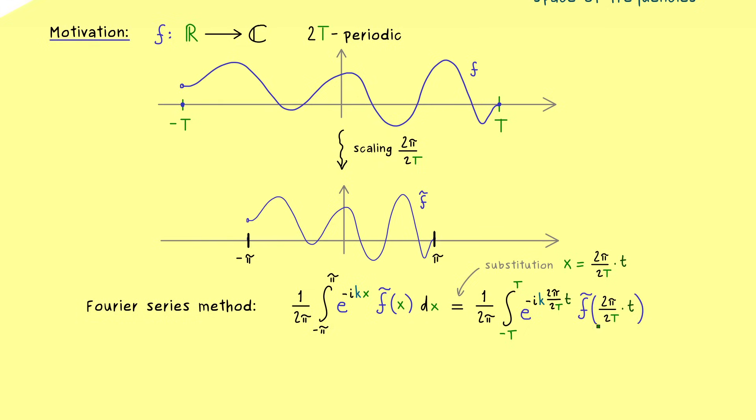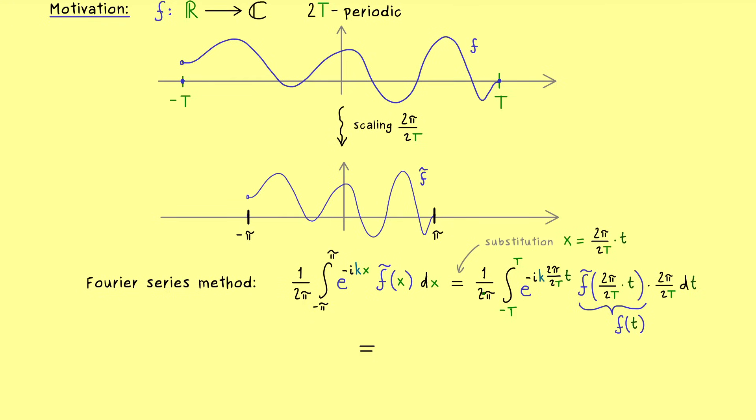And now inside the integral we also have f tilde scaled, which is our original function f. In other words, this here is simply f of t. And finally we have the last part of our substitution, which is the differential dt. And there you should see, it cancels nicely with the factor in front of the integral. Therefore our new factor in front is the new period 2 times T. And moreover we have our full result. This one is the final formula for the Fourier coefficient if the period is given by 2T. In other words, these are the functions that form an ONS with our new period.